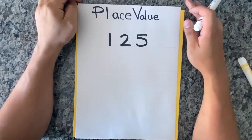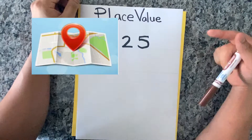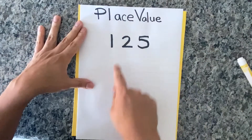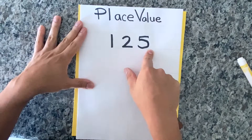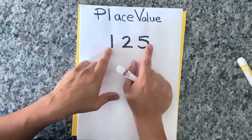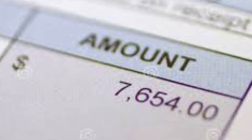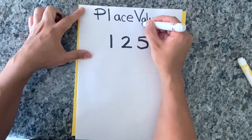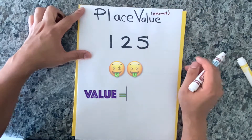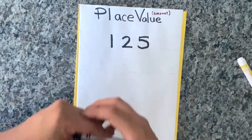Ladies and gentlemen, boys and girls, children of all ages — today we are going to be talking about place value. And no, I'm not talking about places that have value. I'm talking about numbers like 125. Each number here is in a certain place, and they all have a certain value — value just means a certain amount.